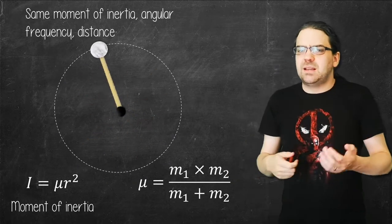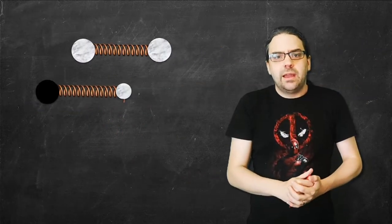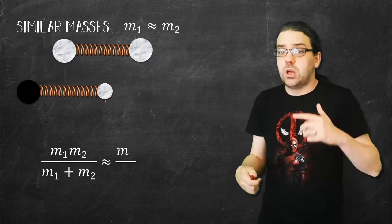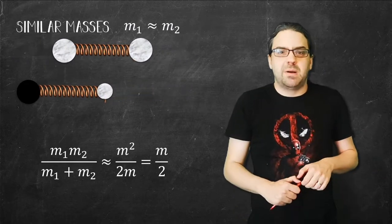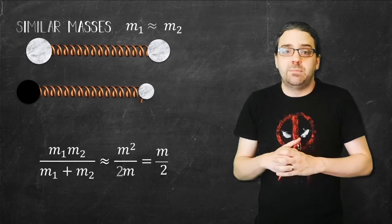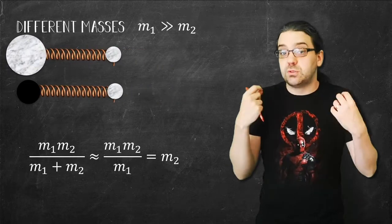Finally, a few properties of the reduced mass to get an intuition of what it does. If the masses are similar, then the reduced mass tends towards half their average mass value. Or at the other extreme, if the masses are very different, the reduced mass tends towards the value of the smallest one.